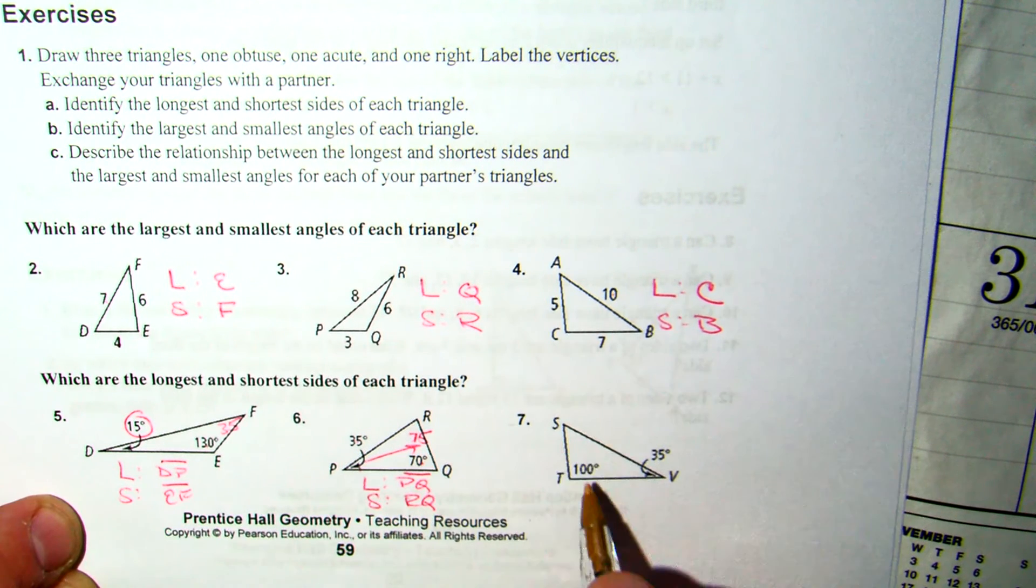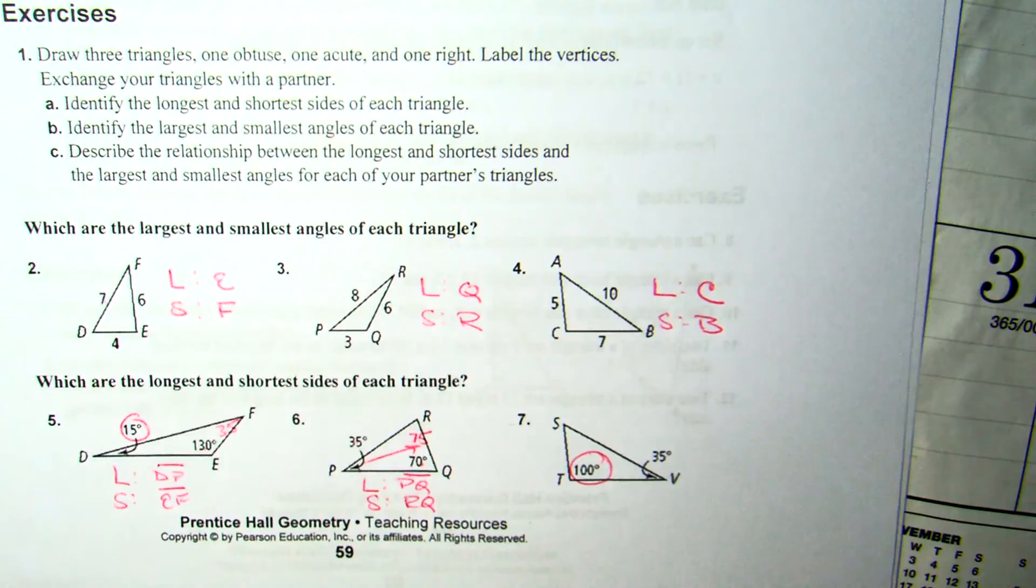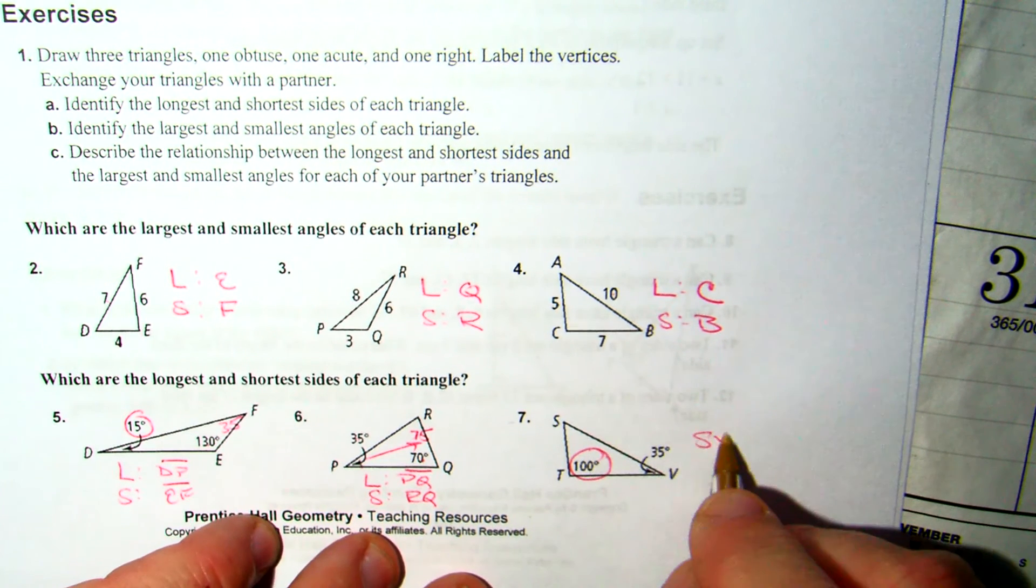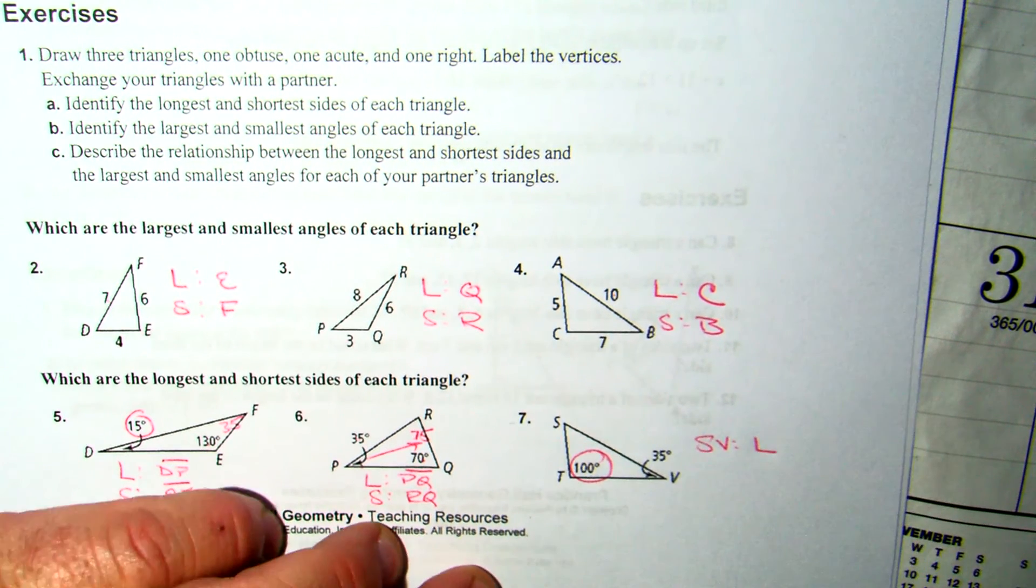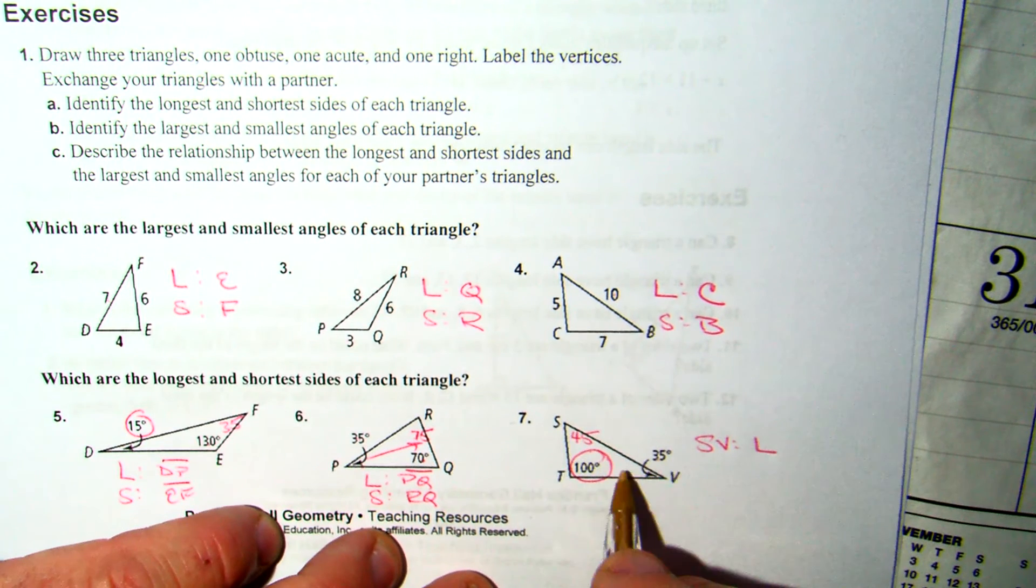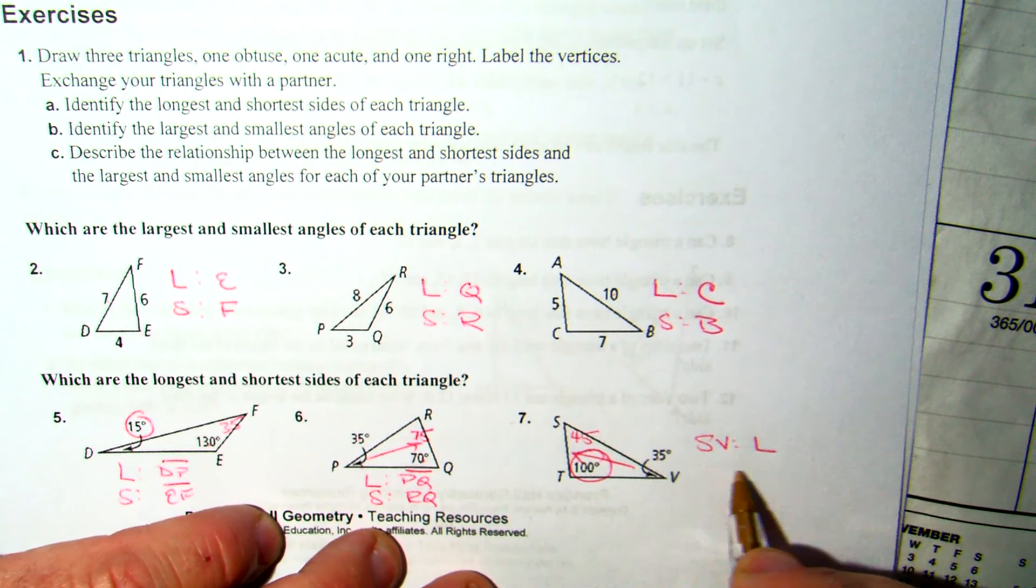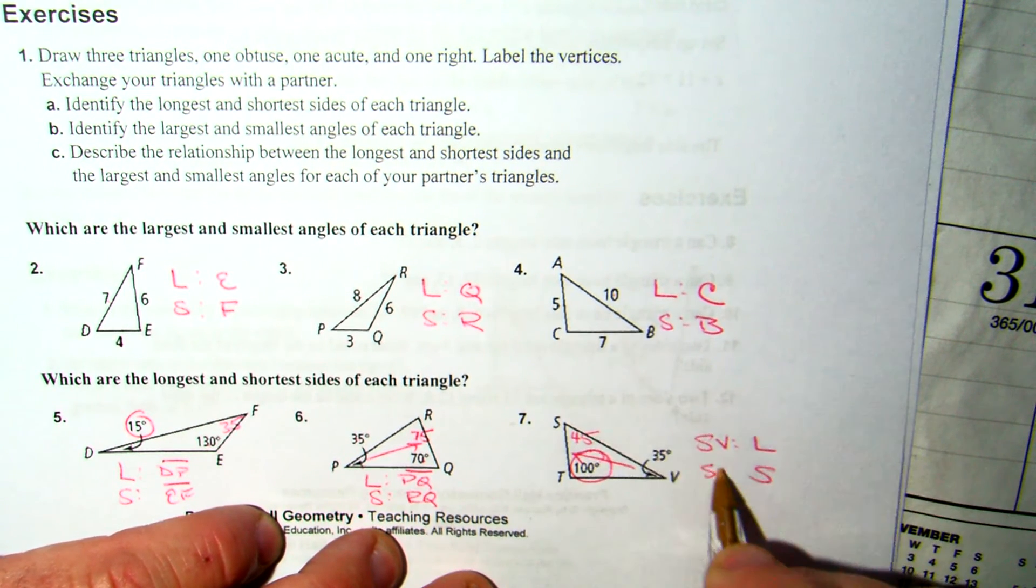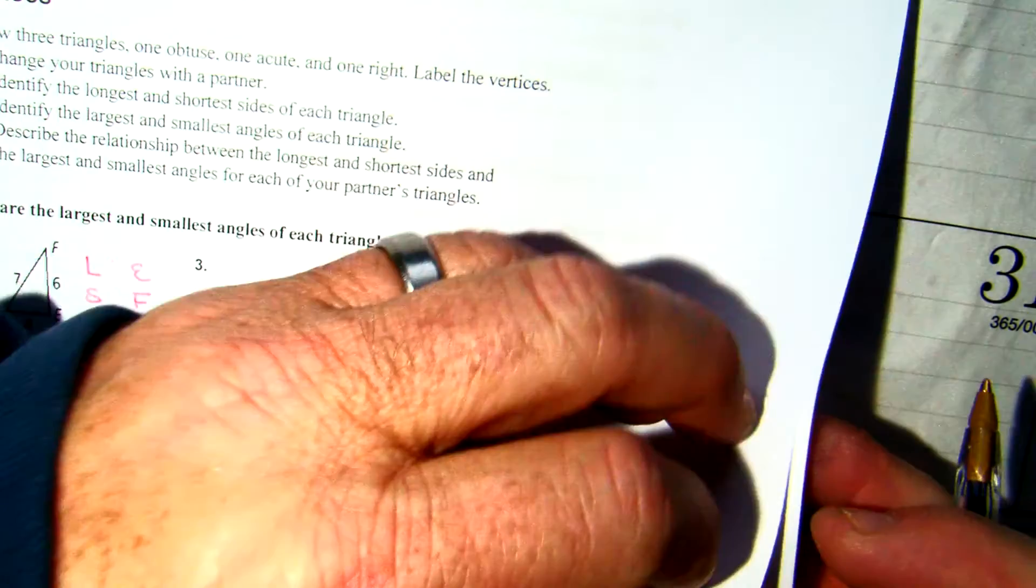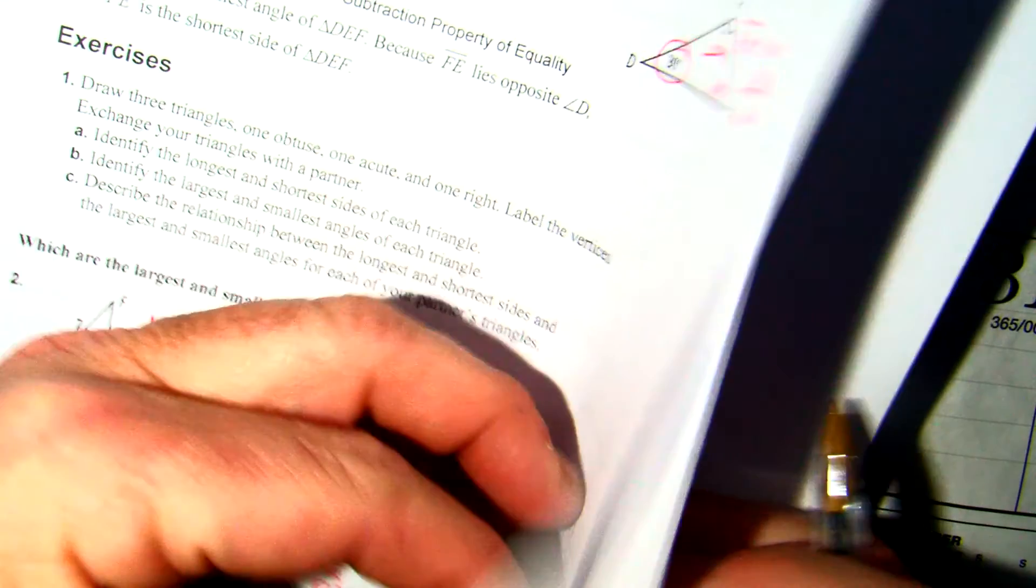Obviously, this is an obtuse angle. It's got to be the longest angle. The angles have to add to less than 180. So that means SV has to be the longest side. To get the shortest side, you've got to compare the two acute angles. Since 35 is less than 45, that makes my shortest TV. So that's how we handle the first part of that.